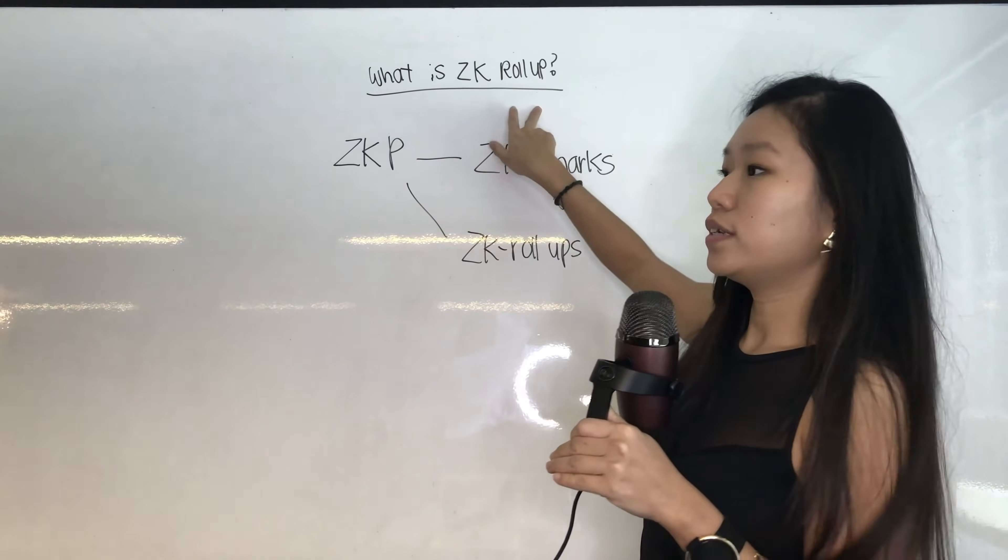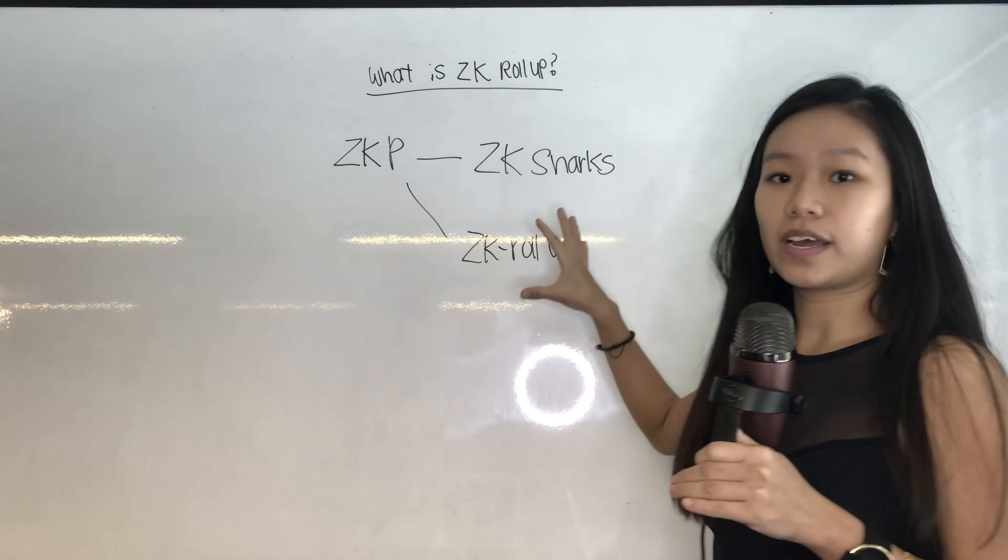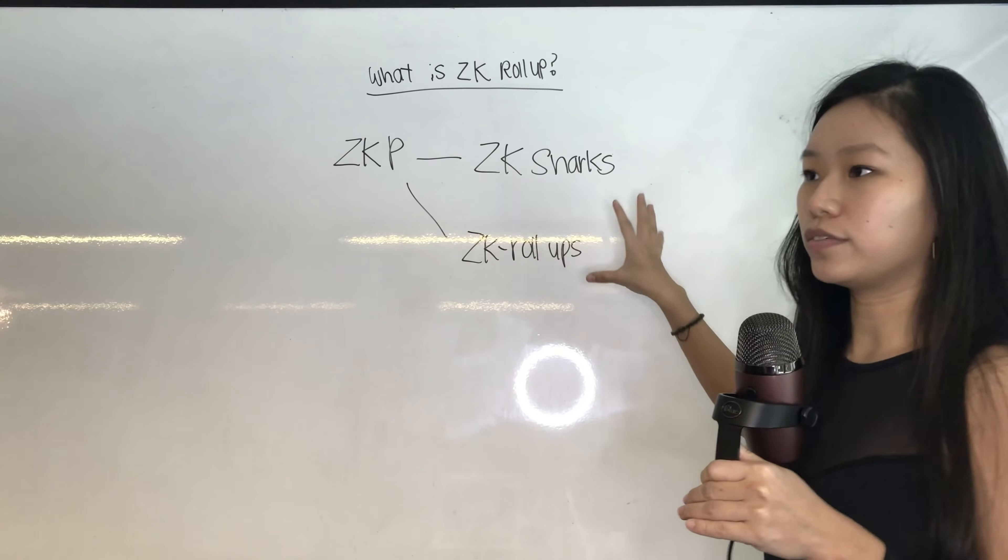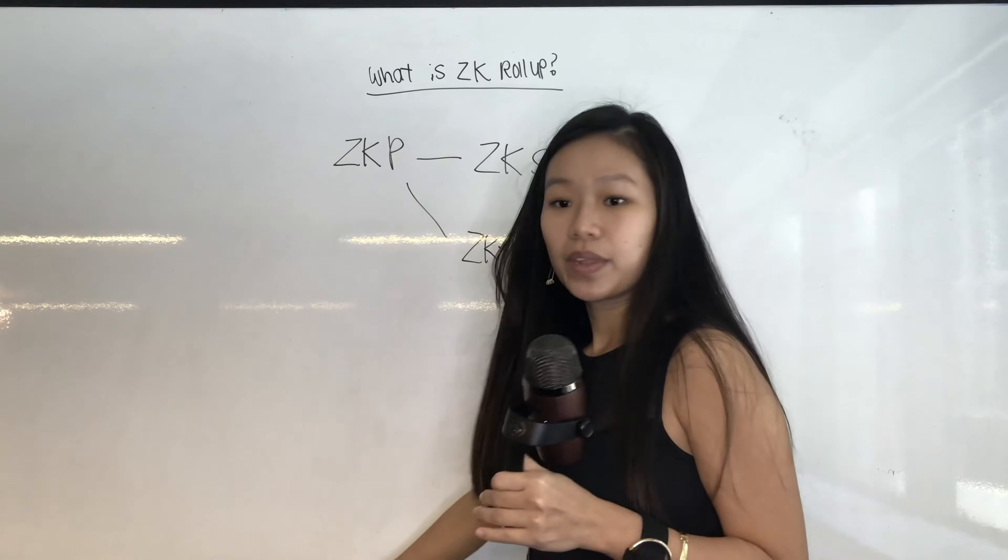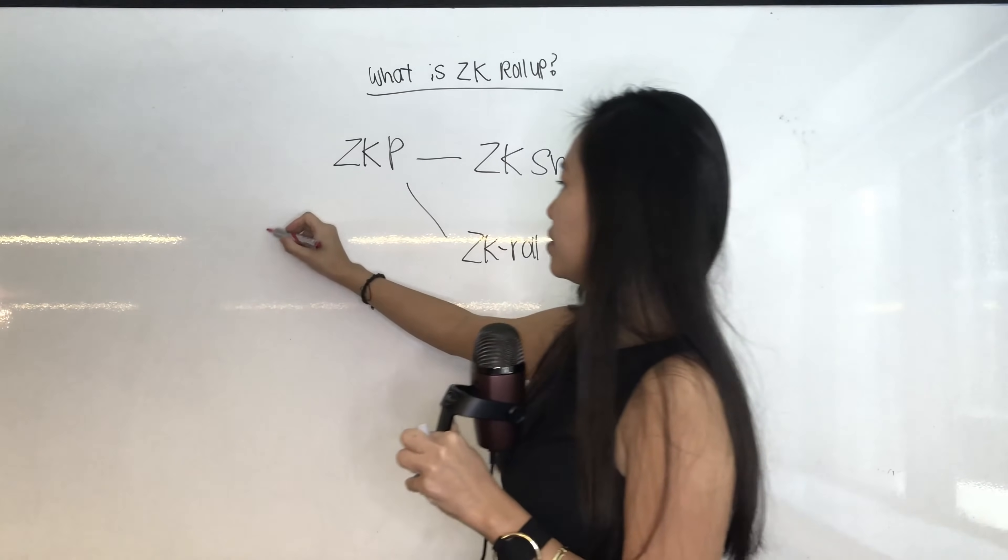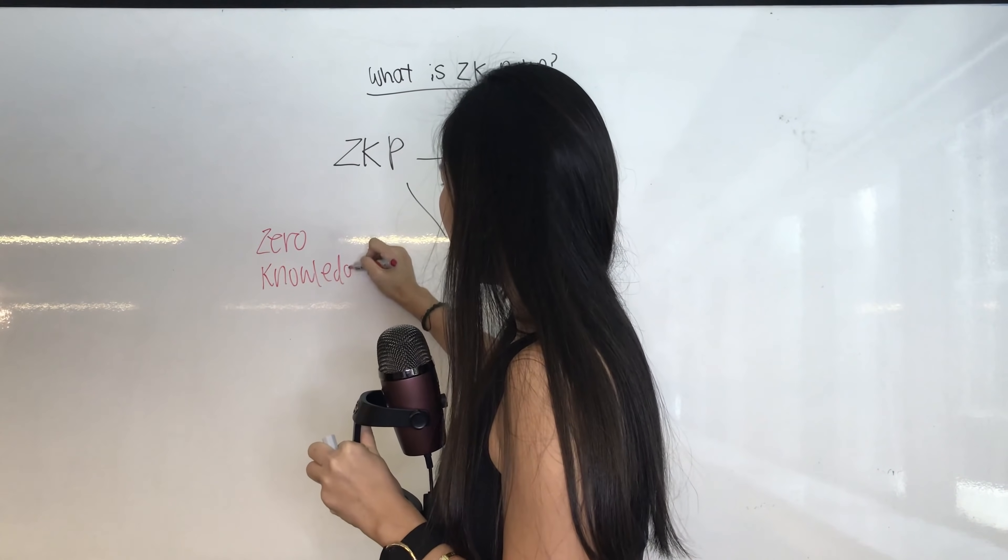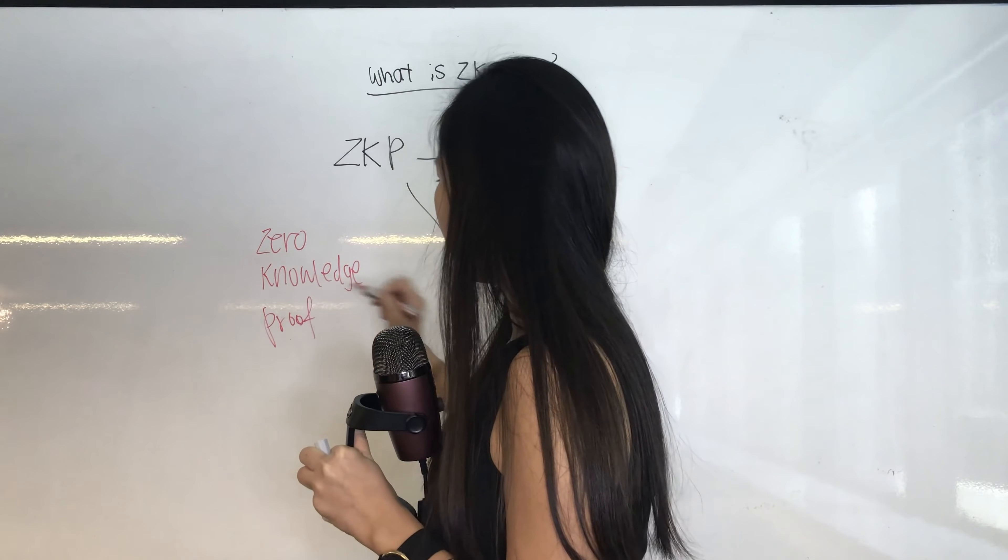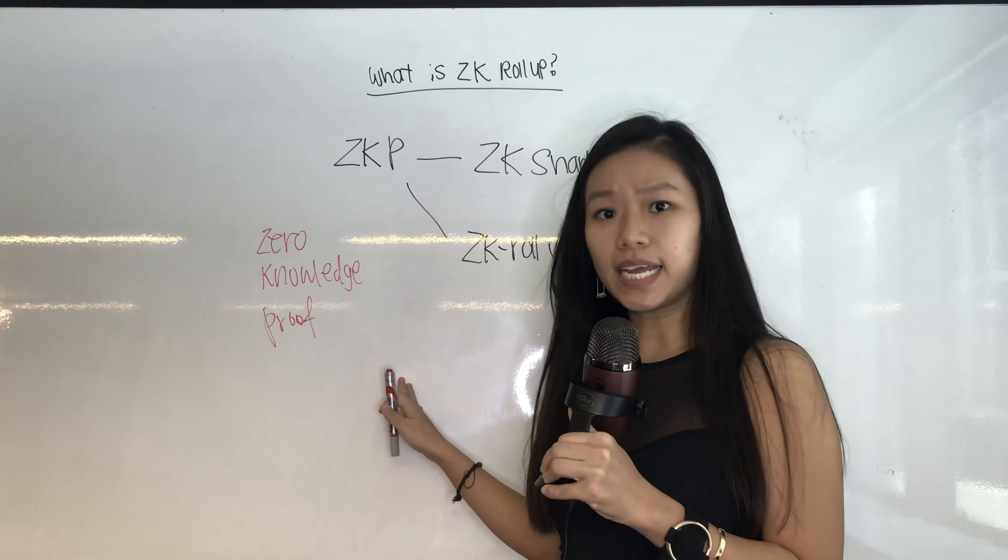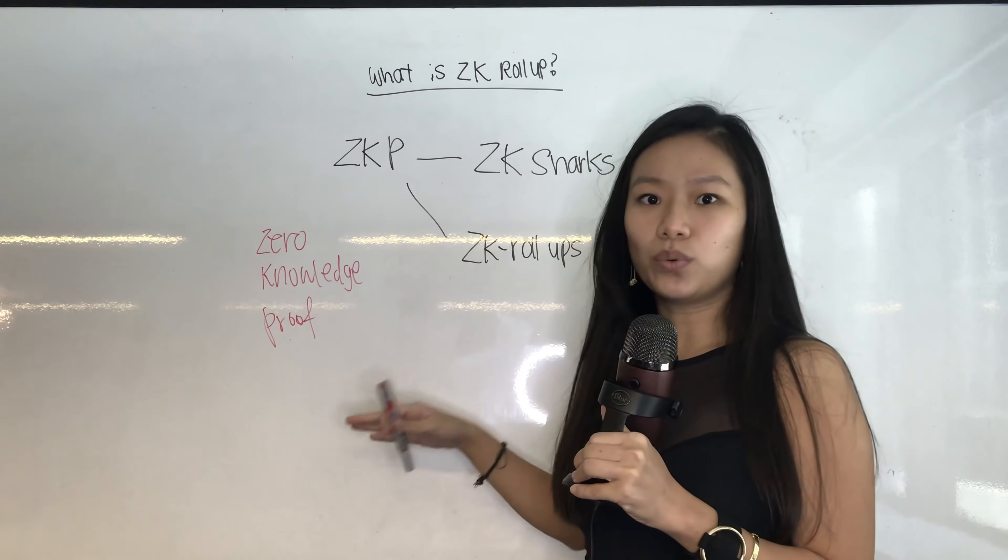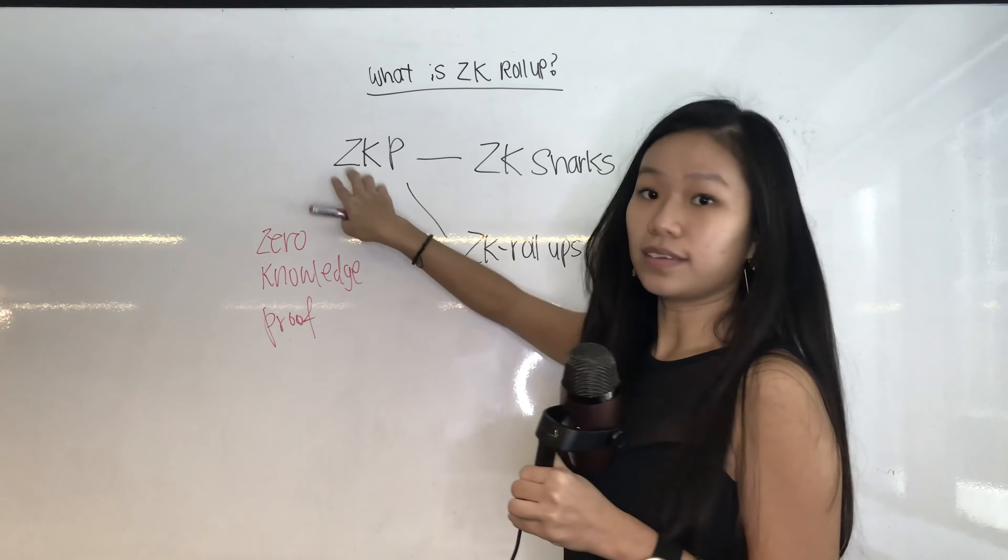We're going to start off with what is ZK Rollup. Before we understand what ZK Rollup is, we have to understand what are the different kinds of ZK protocols in place. So what is ZK? We always start with this thing called ZKP. ZKP means zero knowledge proof. This is something that is in cryptography. It's been in play since the 1980s. So it has nothing really got to do with blockchain. It's just a form of cryptography that's very important and we use them in different ways.